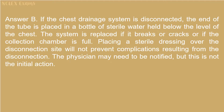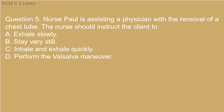Answer B. If the chest drainage system is disconnected, the end of the tube is placed in a bottle of sterile water held below the level of the chest. The system is replaced if it breaks, cracks, or if the collection chamber is full. Placing a sterile dressing over the disconnection site will not prevent complications. The physician may need to be notified, but this is not the initial action.